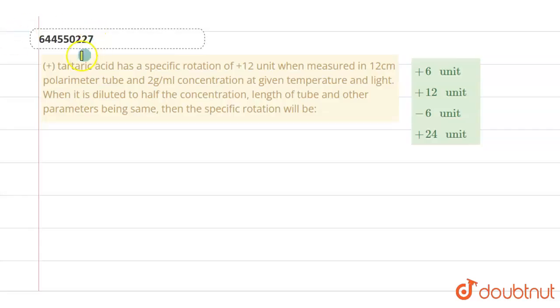Hello everyone, so today's question is: Plus tartaric acid has a specific rotation of plus 12 unit when measured in 12 centimeter polarimeter tube and 2 gram per ml concentration at a given temperature and light. When it is diluted to half the concentration, length of tube and other parameters being same, then the specific rotation will be.